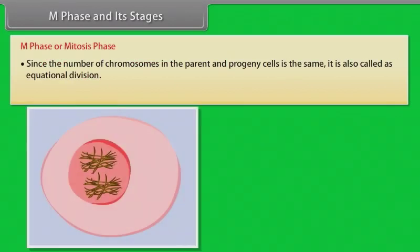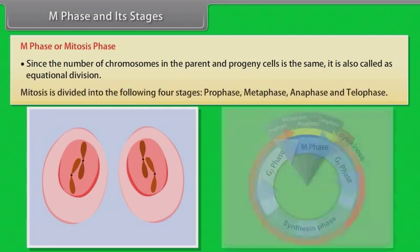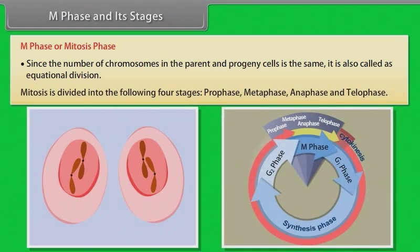M phase is also known as mitosis phase. Since the number of chromosomes in the parent and progeny cells is the same, it is also called equational division. Mitosis is divided into the following four stages: Prophase, Metaphase, Anaphase, and Telophase.